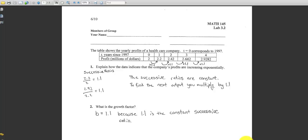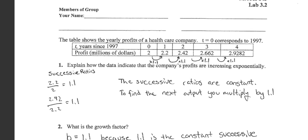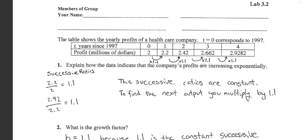Hello, everyone. This is the video solutions to Lab 3.2. So first we're given a table, and it says it shows the yearly profits of a health care company. T equals zero corresponds to 1997.